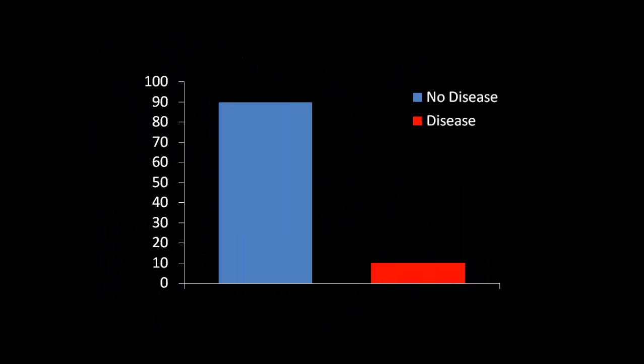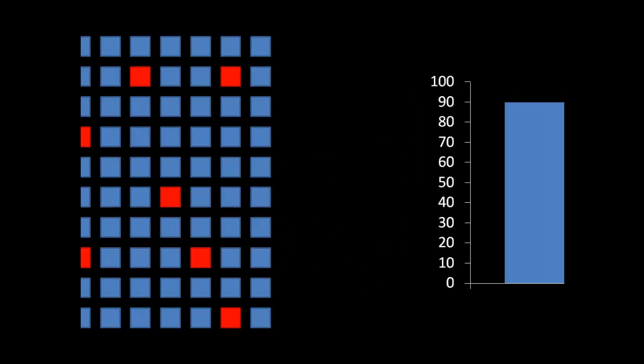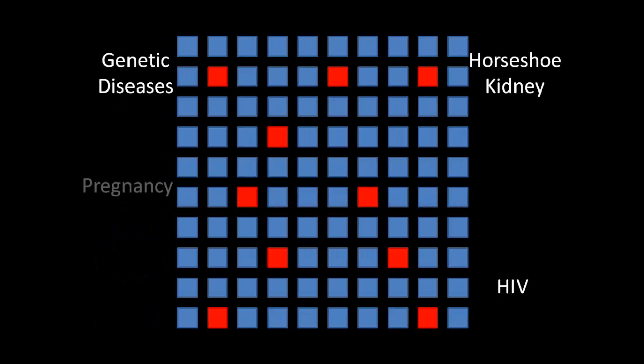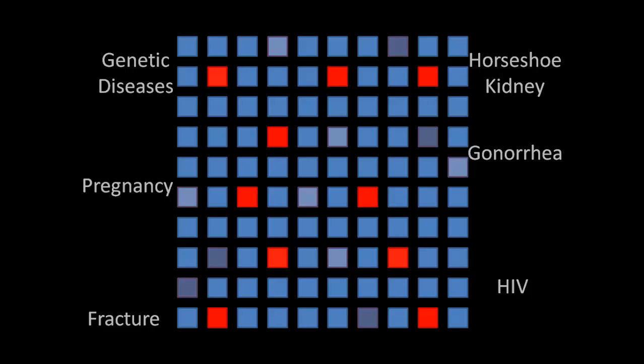Let's start with a population — let's say we have a hundred people. Some fraction of these people may have a certain disease. Sometimes these diseases have complete penetrance and you can say that 90% don't and 10% do for sure. This could include diseases like genetic diseases, horseshoe kidney, pregnancy, gonorrhea, fracture, HIV — things that you either have or you don't.